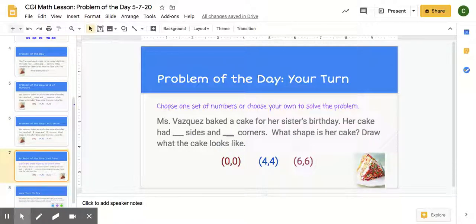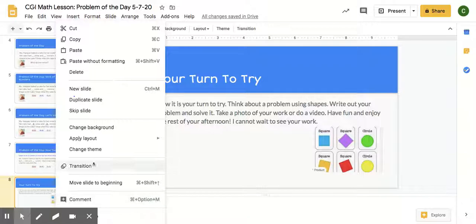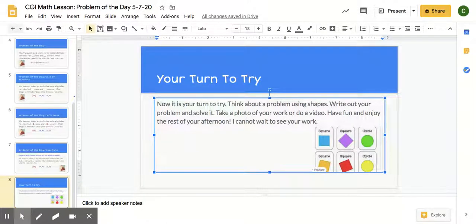Now it's going to be your turn. You're going to choose your own set of numbers. You're not going to choose zero, zero because we already did zero, zero. So you've got to choose something else. You can do four, four, six, six. And I want you to think about what shape the cake is going to be. Let's reread the story one more time. Choose one set of numbers or choose your own to solve the problem. Miss Vasquez baked a cake for her sister's birthday. Her cake had blank sides and blank corners. Which shape is her cake? Draw what the cake looks like.